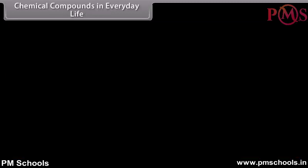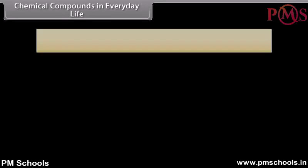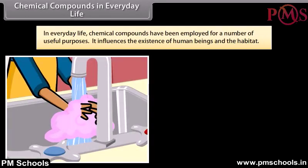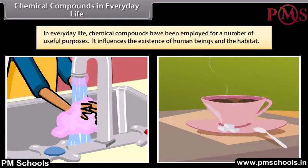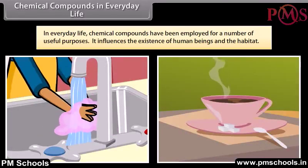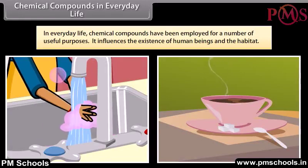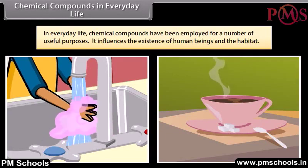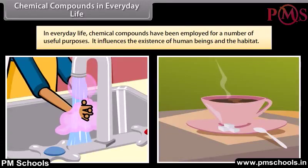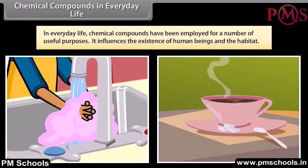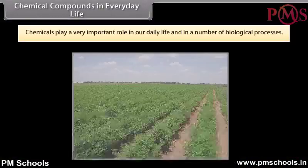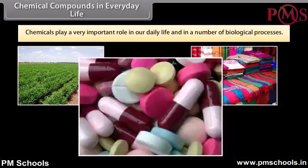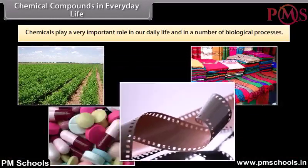In everyday life, chemical compounds have been employed for a number of useful purposes. For example, sugar is used to sweeten tea, and soaps are used for washing and bathing purposes. It influences the existence of human beings and their habitat. A number of compounds also find application in agriculture, textiles, medicines, photography, etc. Thus, chemicals play a very important role in our daily life and in a number of biological processes.